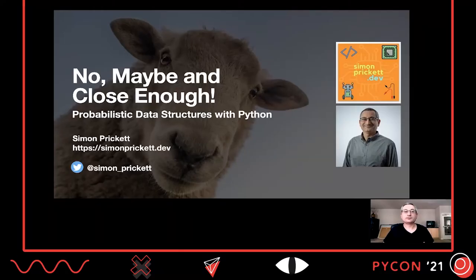Hello, my name is Simon Prickett, and this is Know, Maybe, and Close Enough, where we're going to look at some probabilistic data structures with Python.